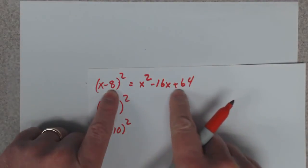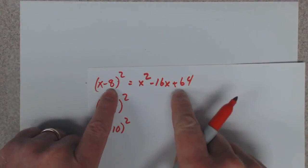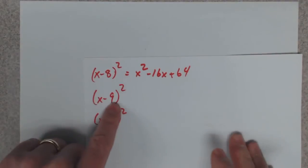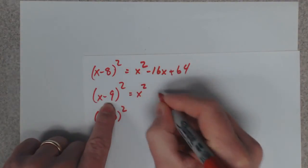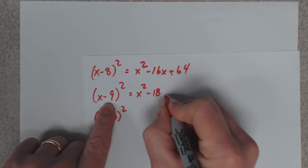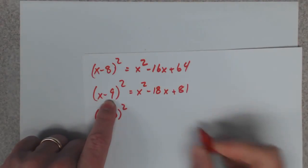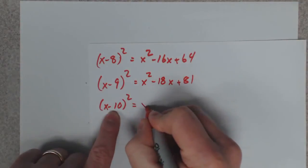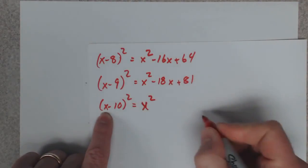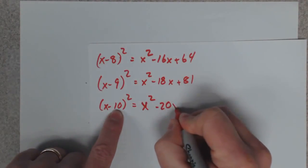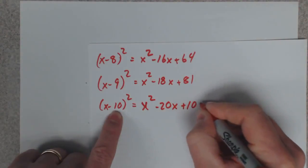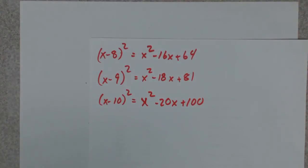So that guy's always gonna be a positive number out here. This guy could be negative. So it's automatically x squared, negative 18. That's 9, double 9 is 18, and 9 squared is 81. Plus 81, automatically x squared, double it, square it. Pretty neat shortcut.